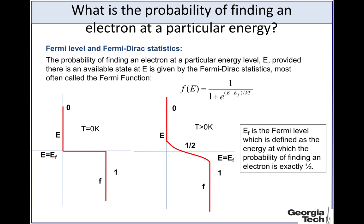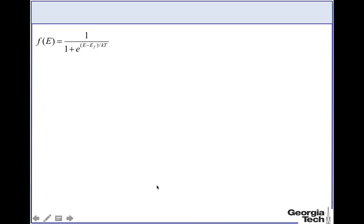Let's think about how we can find the probability of finding an electron at a particular energy, provided there is an available state at that energy. This is called the Fermi-Dirac distribution, or Fermi-Dirac statistics, and it involves an energy called EF. Let's look at the behavior of this Fermi function F(E). We'll plot energy on the y-axis and probability on the x-axis.